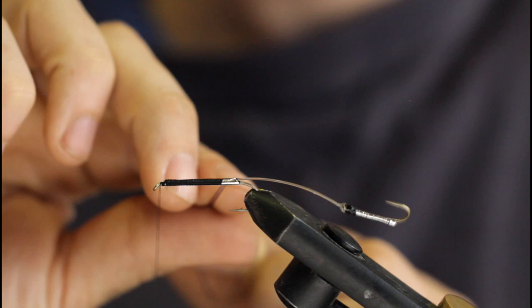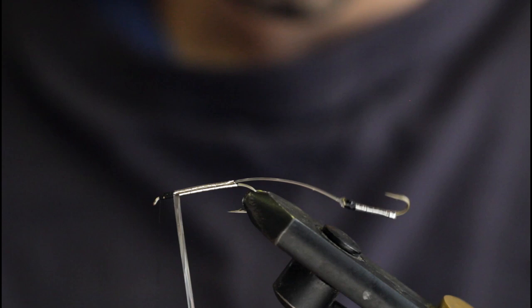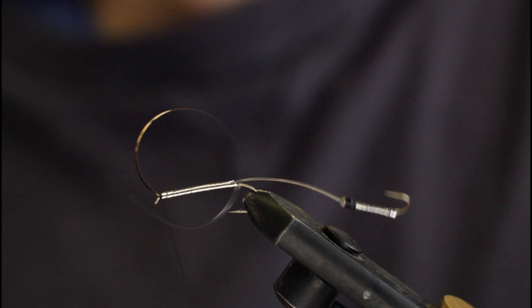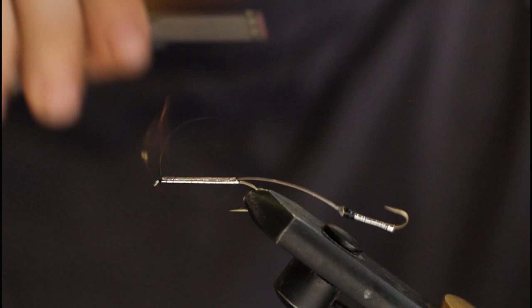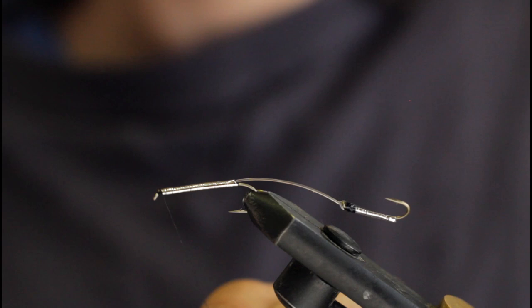Now wrap the tinsel, try to get even touching turns. Now tie it down. Go in front and behind to secure the material. I'll grab my scissors and snip it off.